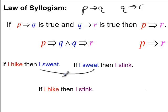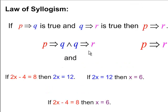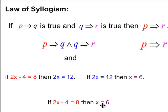This only works if the order is correct: if P then Q, and if Q then R. These have to be right — if you switch this order it won't work. You have to have this commonality of Q, so P goes straight to R. Here's an algebra example that's a little less gross: if 2X minus 4 equals 8, then you can conclude that 2X equals 12. If 2X equals 12, then X equals 6. So given these two statements, you can directly go from 'if 2X minus 4 equals 8' to 'X equals 6.' That's the Law of Syllogism.